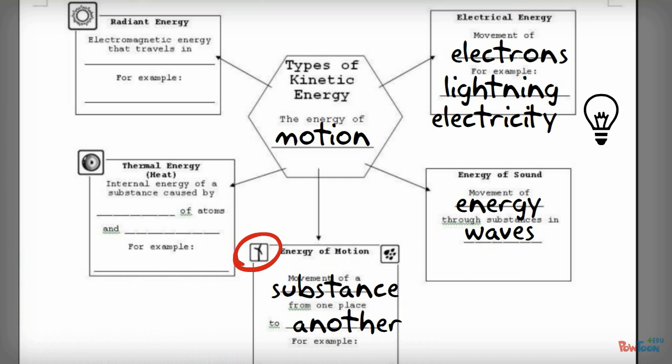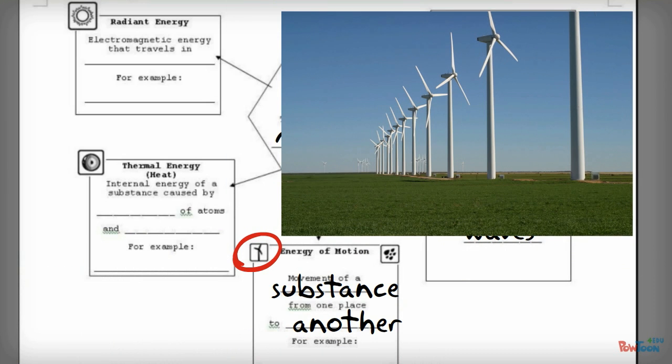So this little icon up here actually links to a graphic that we'll look at in future pages of this activity book. But this is sort of a basic diagram of a windmill or a wind turbine. So more and more we are using wind turbines that connect to generators and convert this energy of motion into electrical energy.